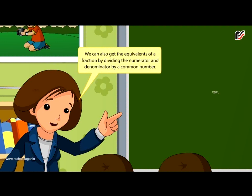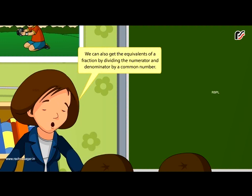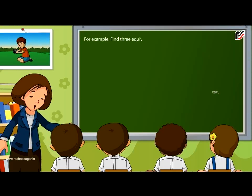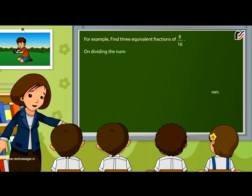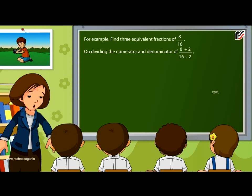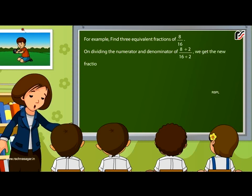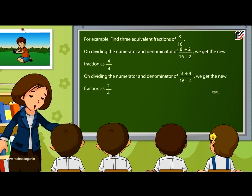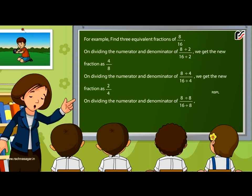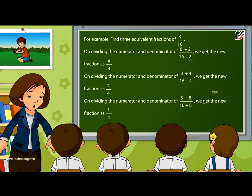We also get the equivalent of a fraction by dividing the numerator and denominator by a common number. For example, find 3 equivalent fractions of 8 by 16. Dividing by 2 gives 4 by 8; dividing by 4 gives 2 by 4; dividing by 8 gives 1 by 4.